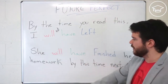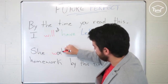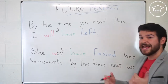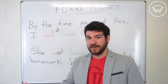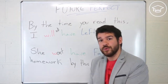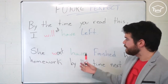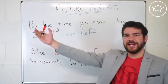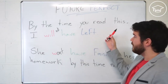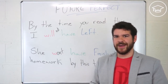She will not or won't — let's use 'won't' now. She won't have finished her homework by this time next week. By this time next week, she will still have to do her homework because it won't be done. This action won't be completed by this time next week. Just like when you finish reading this, I will not have left — I will be still here.